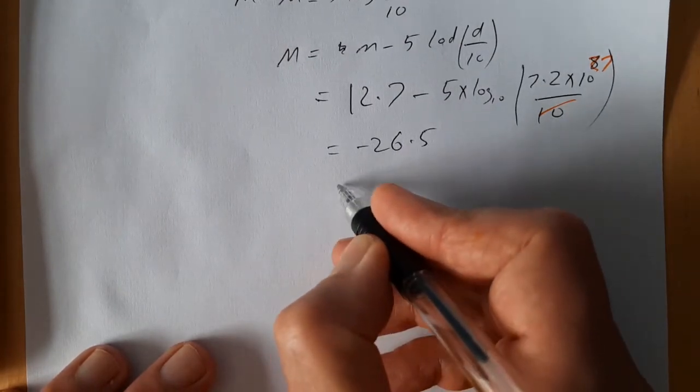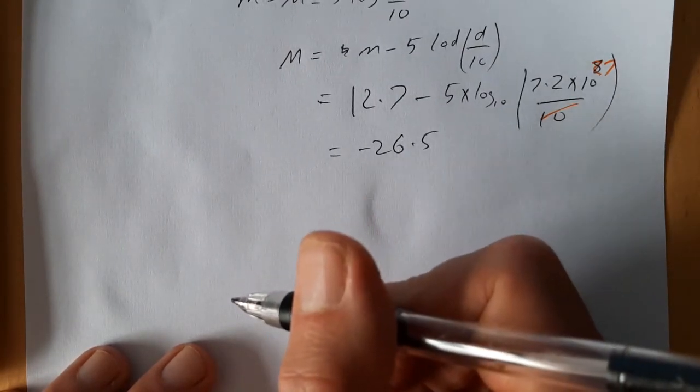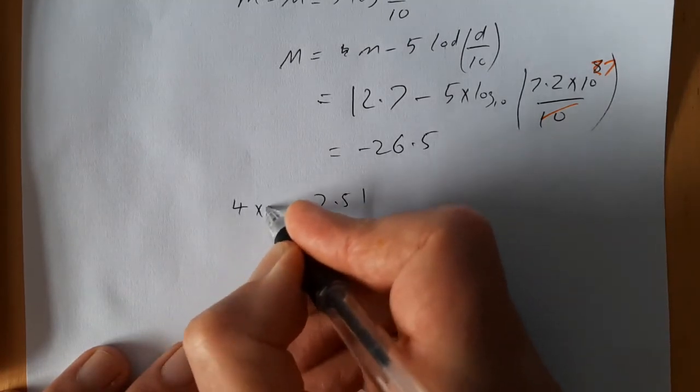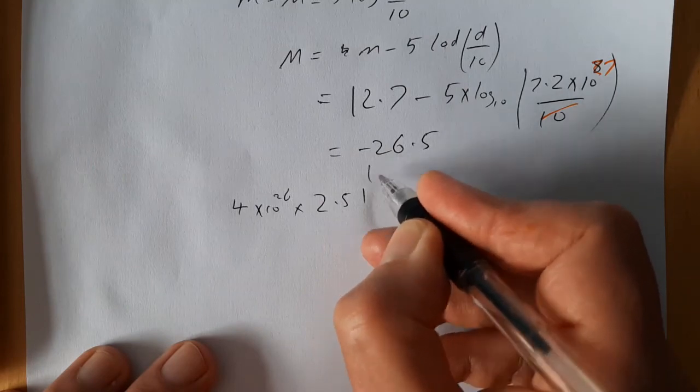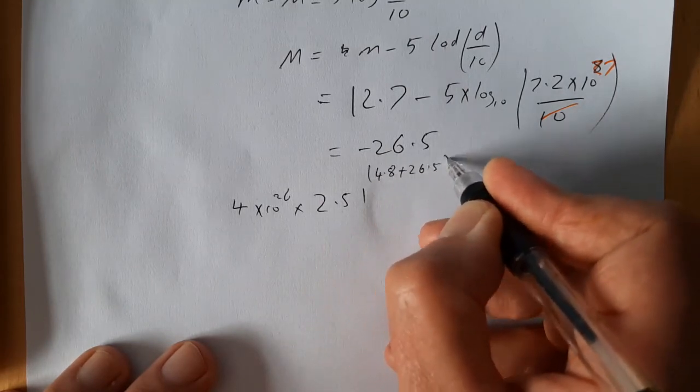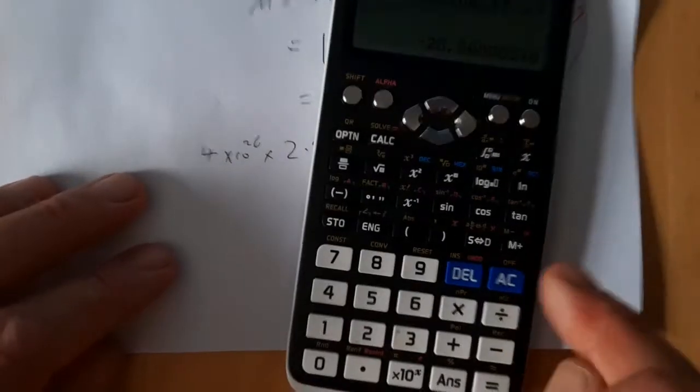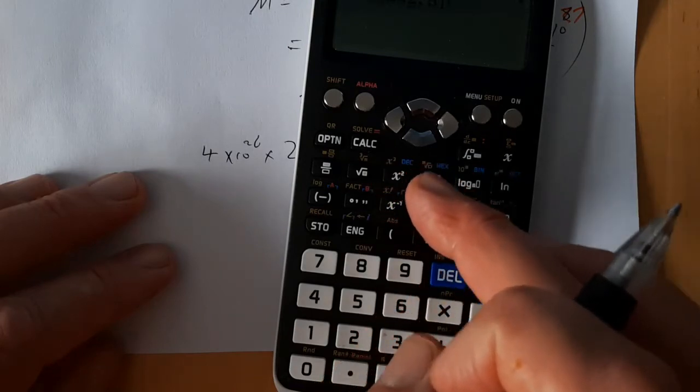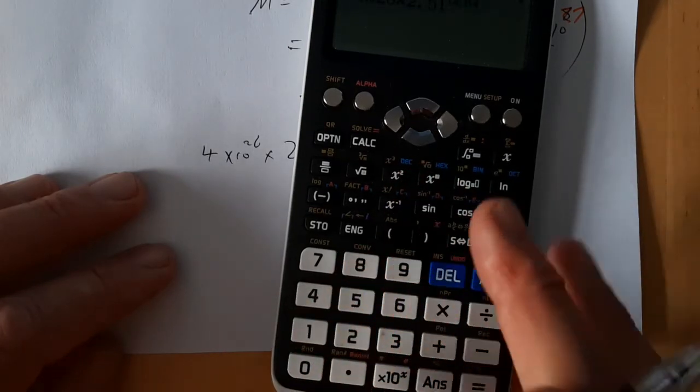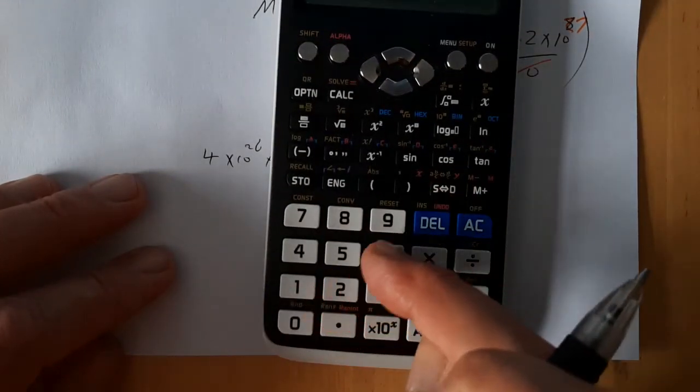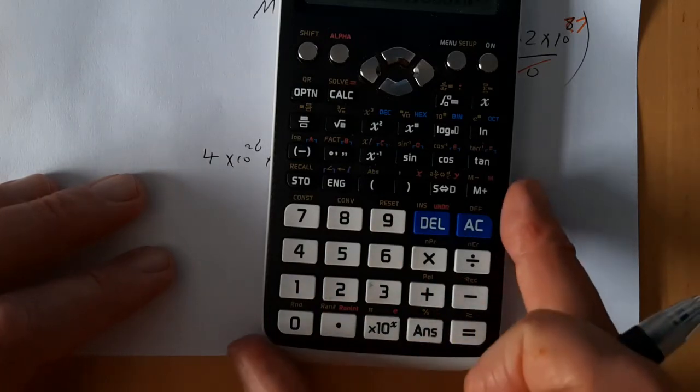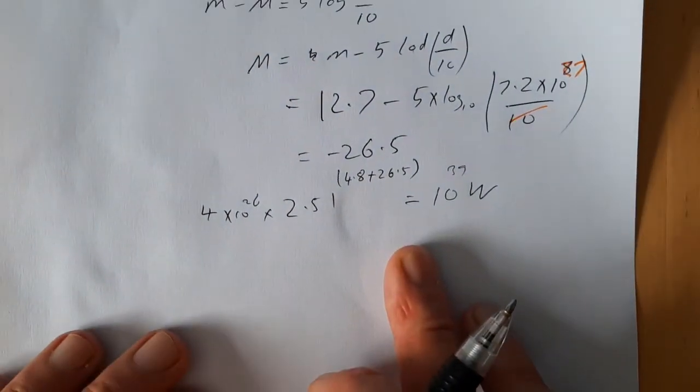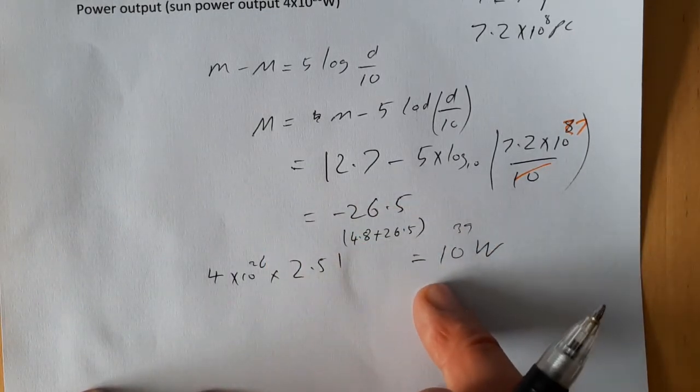So now we'll estimate the power output of the sun. So we've got to do, remember that the apparent magnitude of the sun is four point eight. So it's two point five one, the power output is four times ten to the twenty six. Two point five one to the power four point eight plus twenty six point five. So four times ten to the twenty six times two point five one to the power brackets four point eight plus twenty six point five close bracket equals, we're talking ten to the thirty nine watts. OK, this is a huge, huge power output. This is kind of like the power output of an entire galaxy.